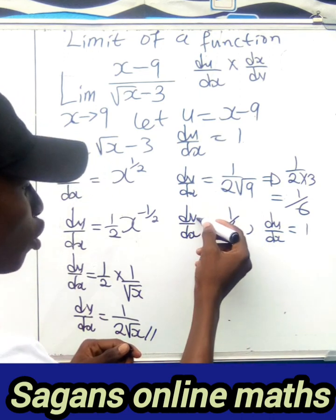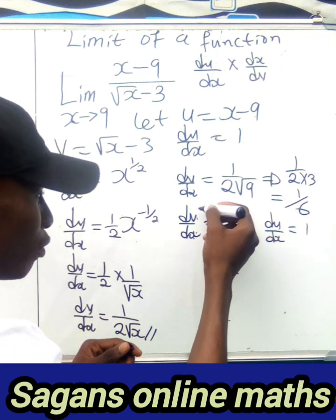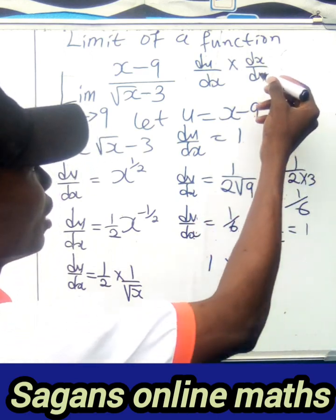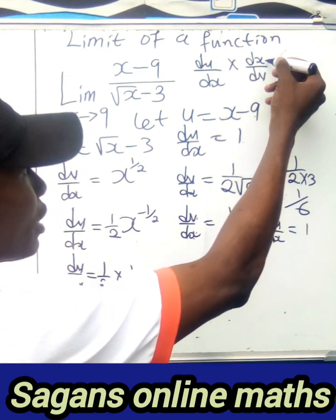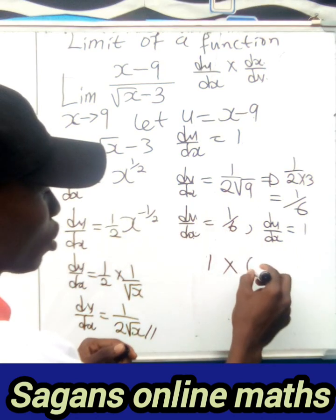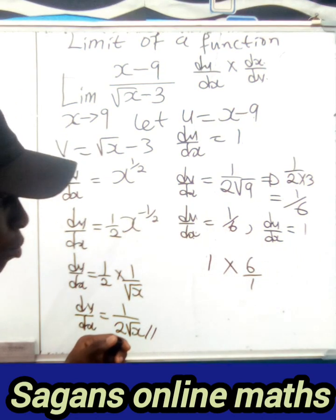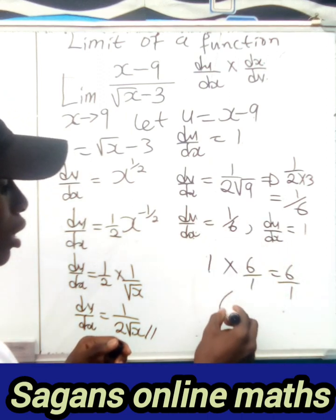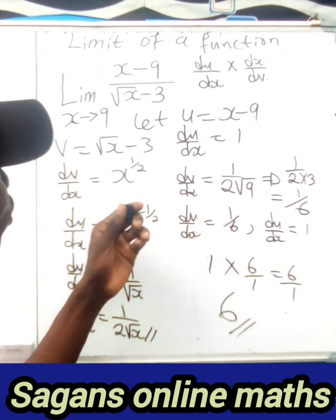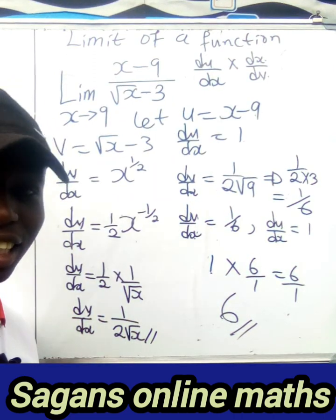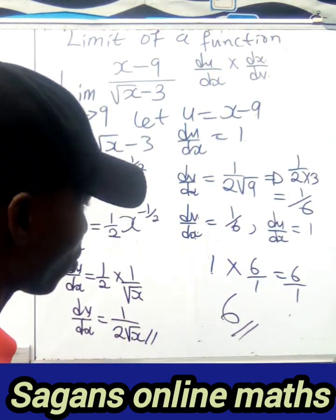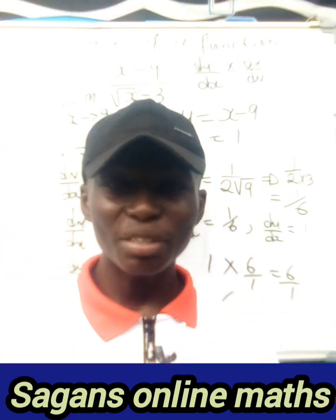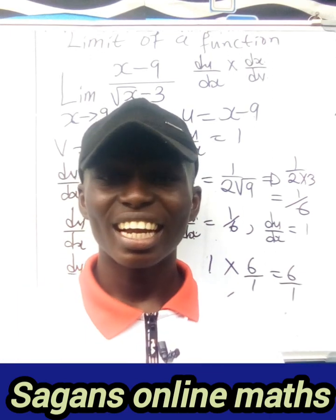So six divided by one is six. You can see how simple it is — I've used two methods to solve this and both give exactly six. This is the clear solution to this particular problem. Thank you for watching this video, please share it with your friends. Thank you and God bless you.